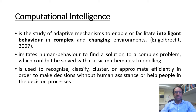Computational intelligence is used to recognize, classify, cluster, or approximate efficiently in order to make decisions without human assistance or help people in decision processes.